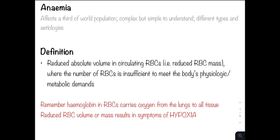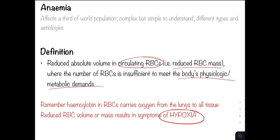Anemia is defined as a reduced absolute volume in circulating red blood cells, so there is a reduction in red cell mass. Remember that red blood cells are mainly responsible for delivering oxygen to tissues, so if there is a reduction in red cells then they are unable to meet the body's physiological and metabolic demands. So patients present with symptoms and signs of hypoxia.